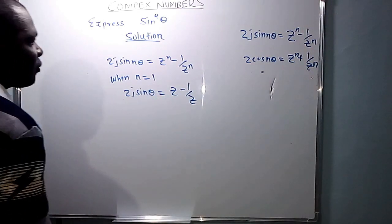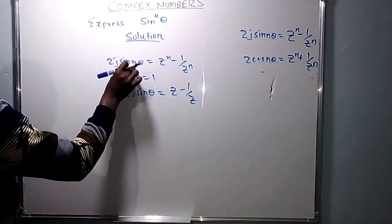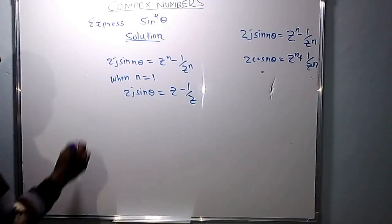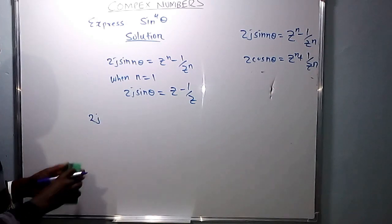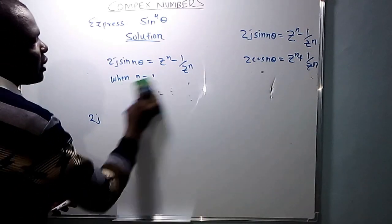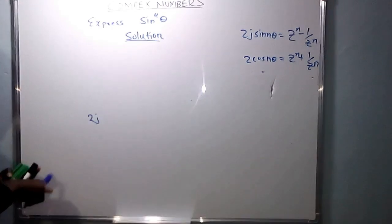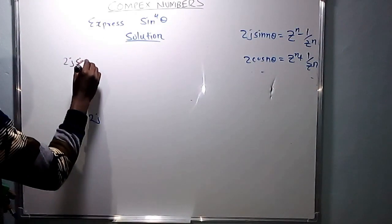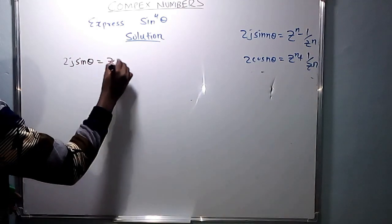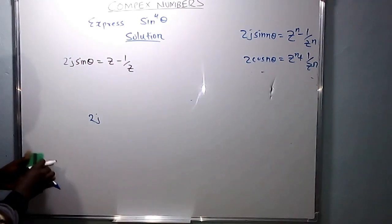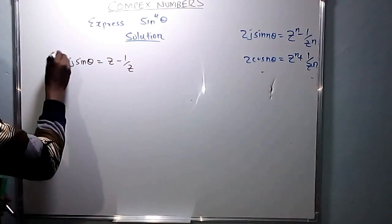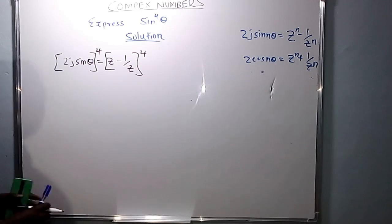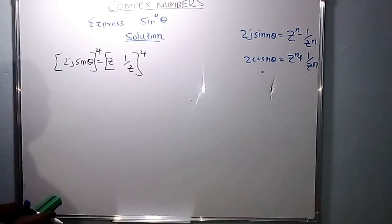Remember when n is 1, meaning we substitute n with 1. So we now have 2j sine theta equals z minus 1 over z. They want us to express sine raised to the power 4 theta in terms of cosines of multiples of theta. To get sine raised to the power 4 theta, we raise both sides of this equation to the power 4.